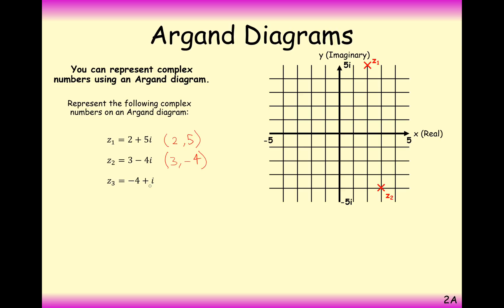And for minus 4 plus i, you'll go left by 4 and up by 1. You can think of this as the coordinate minus 4, 1. Plot the coordinate and put a z3 next to it so you don't lose track of which complex number is which one.